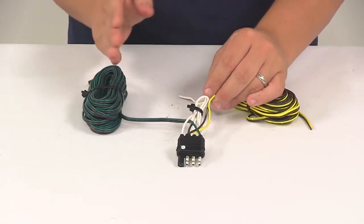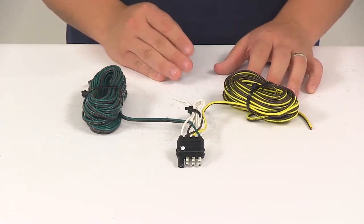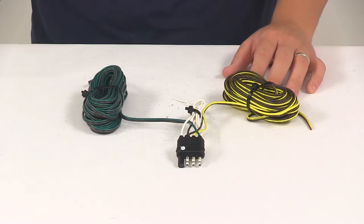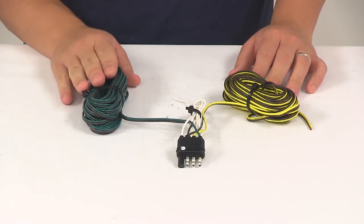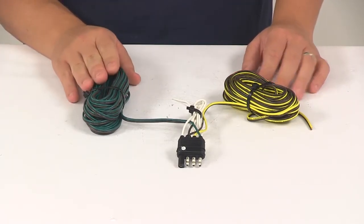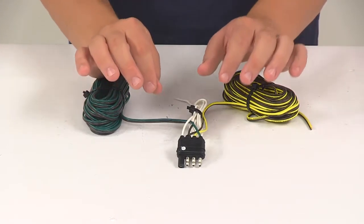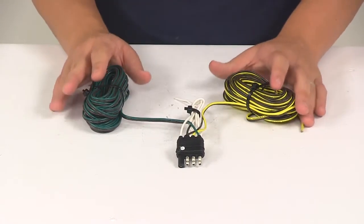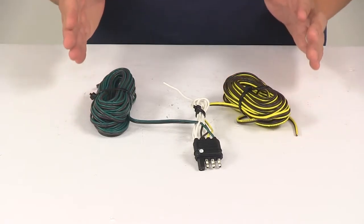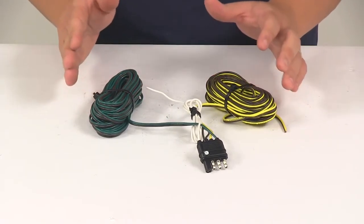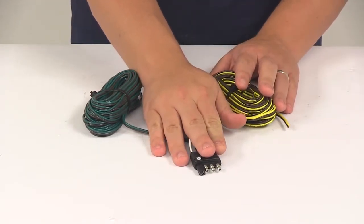So the left side taillight wire is actually bundled with the yellow left turn and brake wire, and then the right side taillight wire is bundled with the green right turn and brake wire. So we actually have two separate brown taillight wires, which is the most effective way to rewire your trailer with the 4-Way Flat Connector.